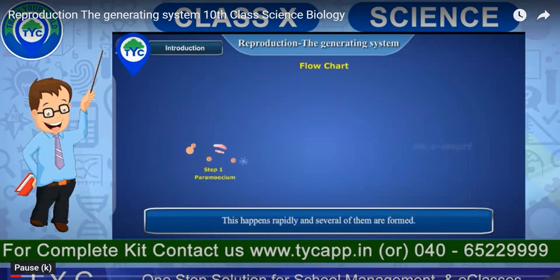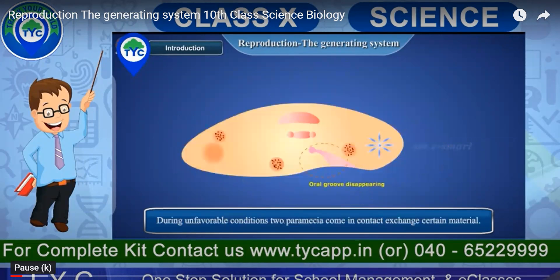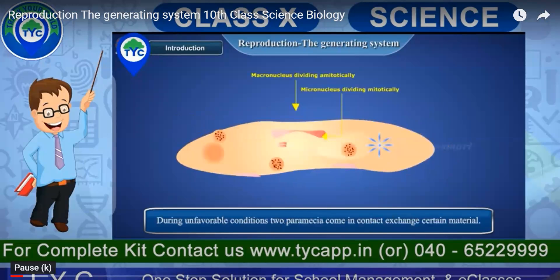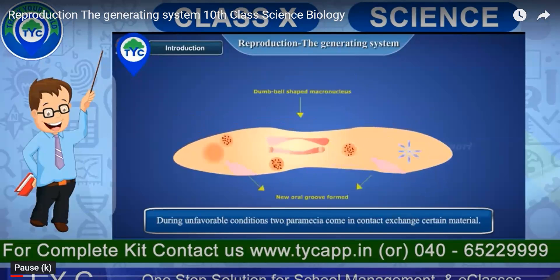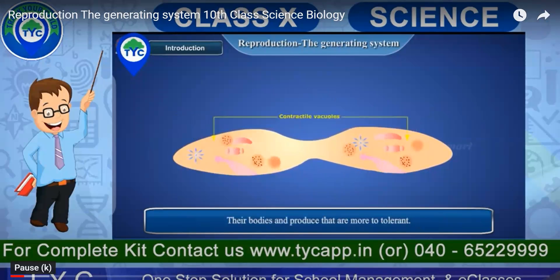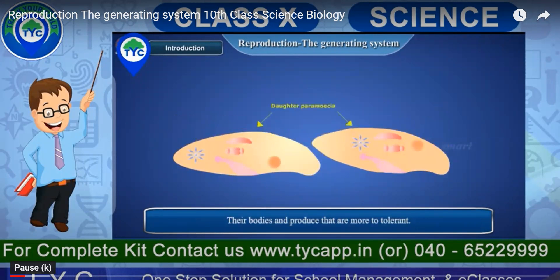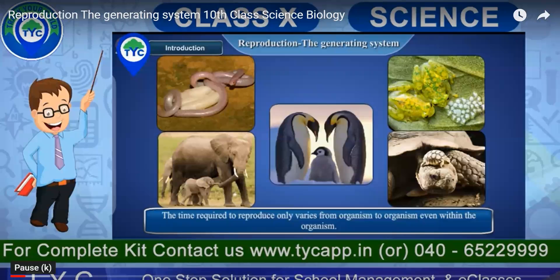They give rise to a daughter Paramecium. In the whole life cycle of Paramecium, the macronucleus divides and all the substances inside the nucleus, as well as the contractile vacuoles, distribute equally. It then gets converted into a new baby daughter Paramecium. That is how Paramecium's life cycle goes.